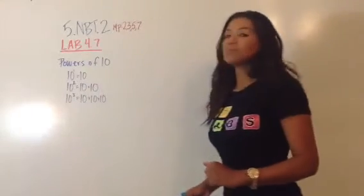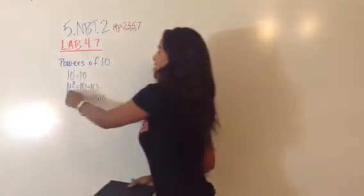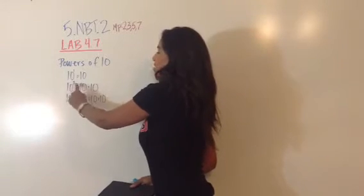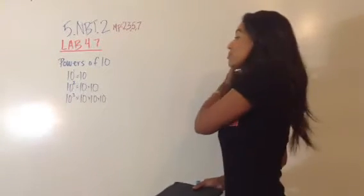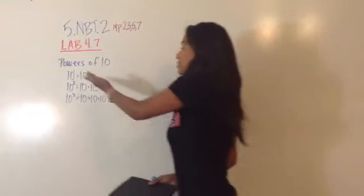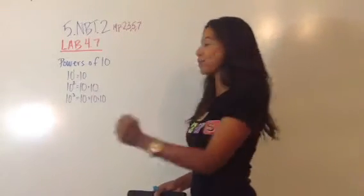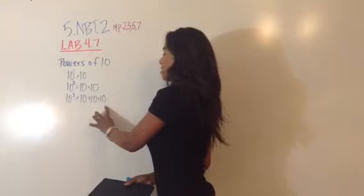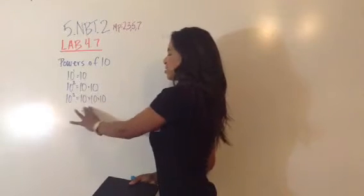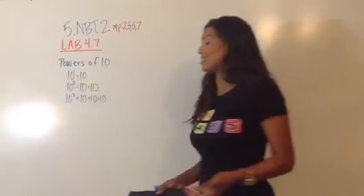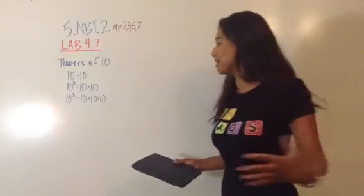Ten to the first power — it's just ten. Ten to the second means ten times ten. That's a hundred, which is a huge number in comparison to ten. What about ten to the third power? Ten times ten times ten. Ten times ten is a hundred, times ten is a thousand. It's very powerful.